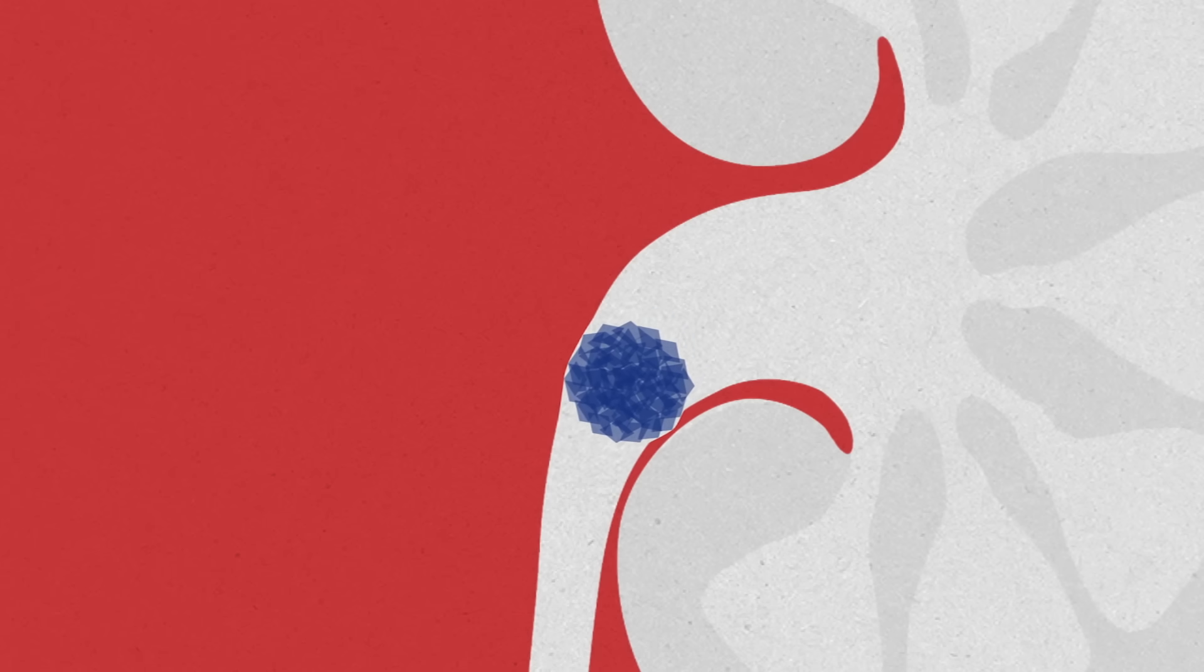Nerve endings embedded in this tissue transmit excruciating pain signals through the nervous system, and the scratches can send blood flowing into the urine.